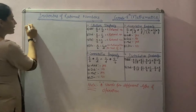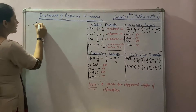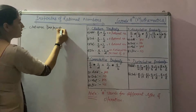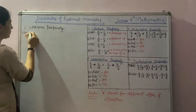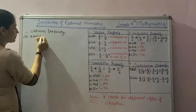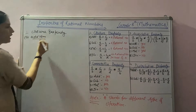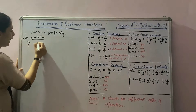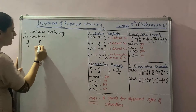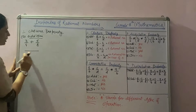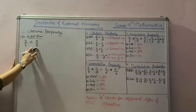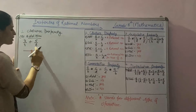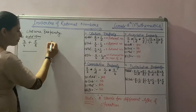The first property is closure property. Let's check this property for addition. Take two rational numbers, 3 by 4 and 5 by 8, and add them. Take the LCM of 4 and 8. What is the LCM of 4 and 8? LCM is least common multiple.